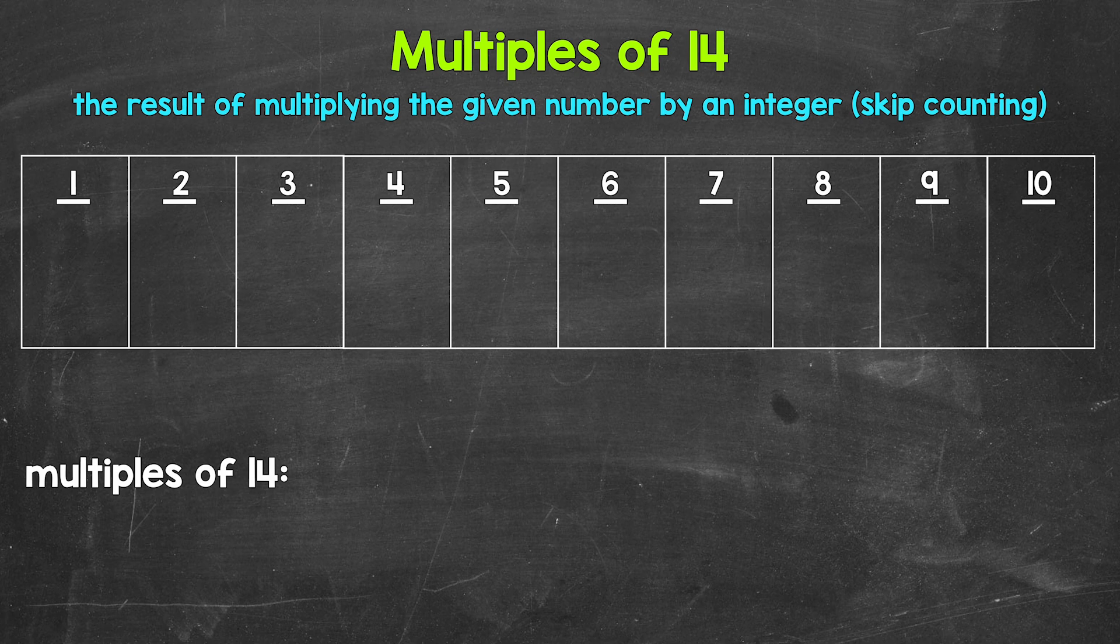So looking at the multiples of 14, let's start with one times 14. That gives us 14. 14 is the first multiple of 14. Then we have two times 14, that's 28. 28 is the second multiple of 14.